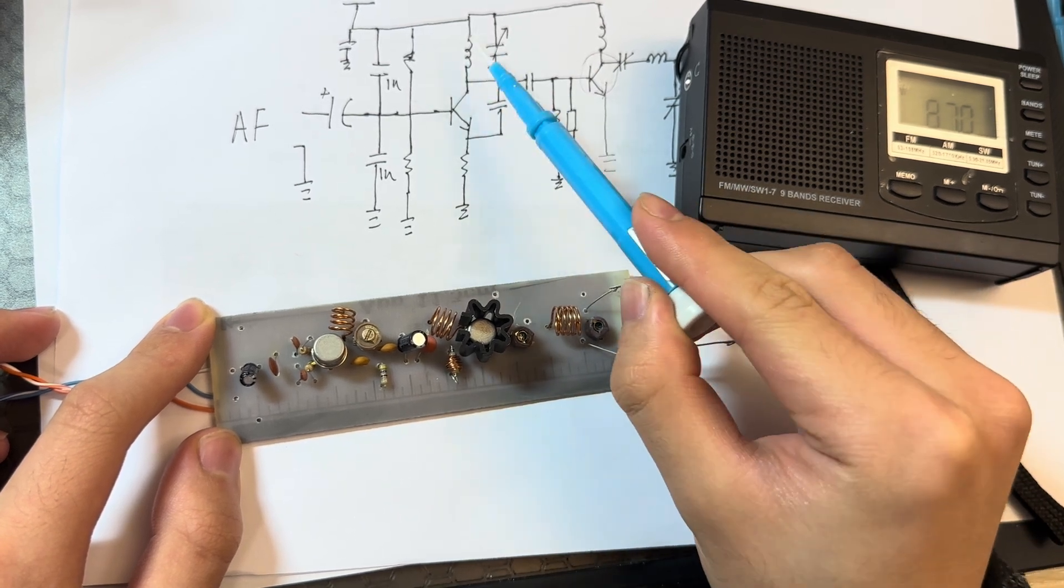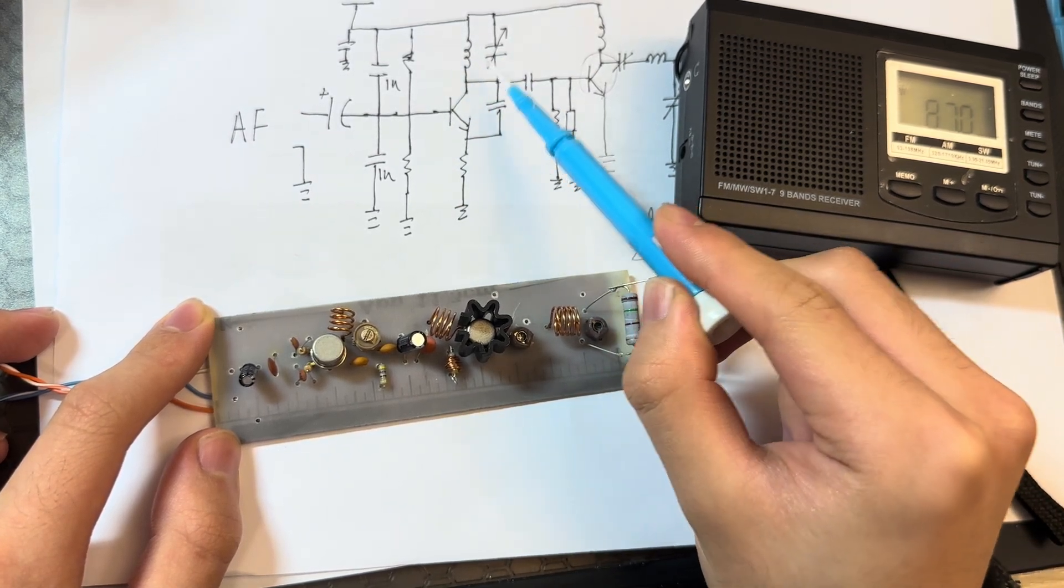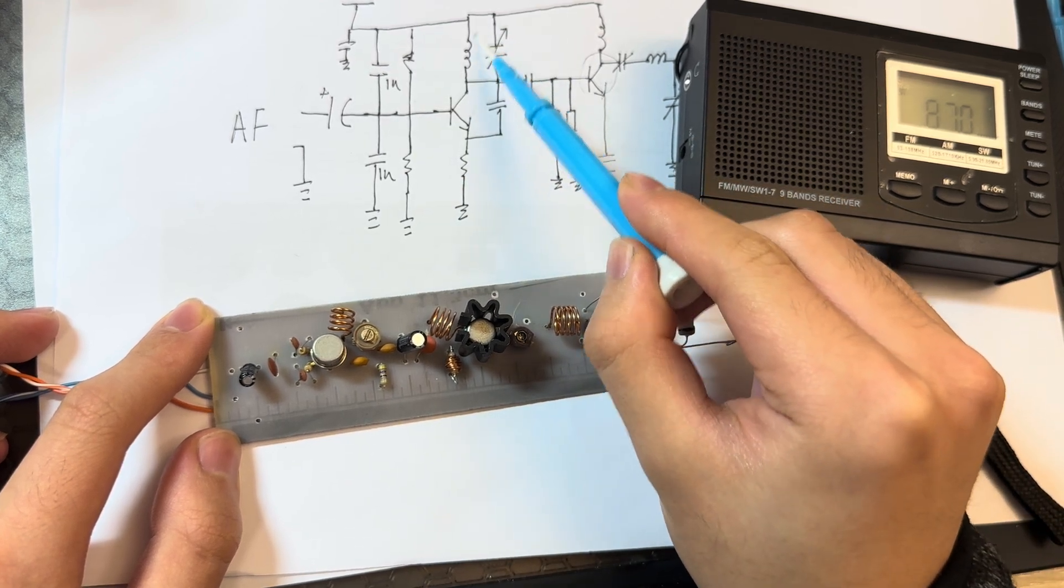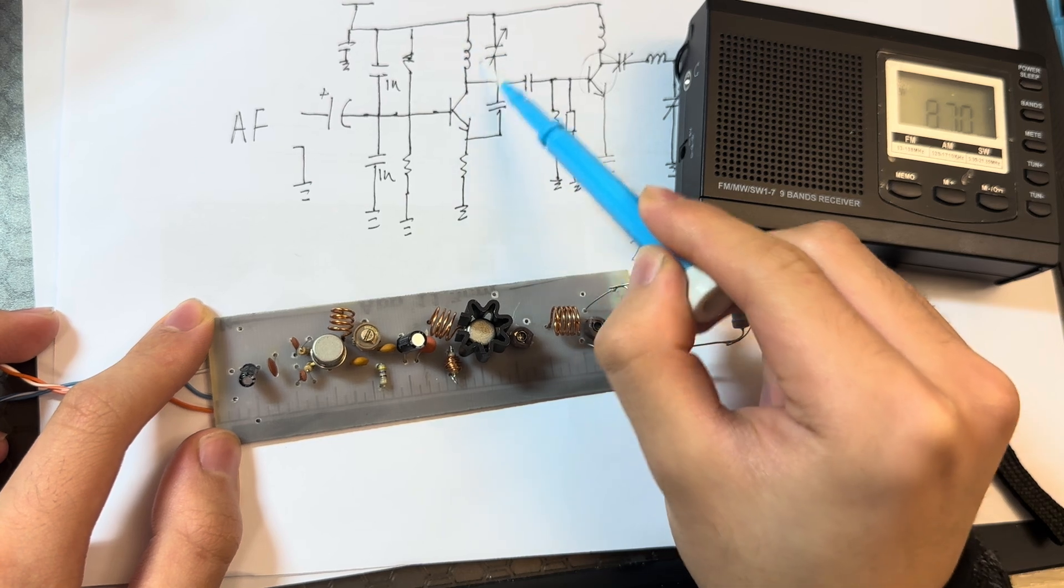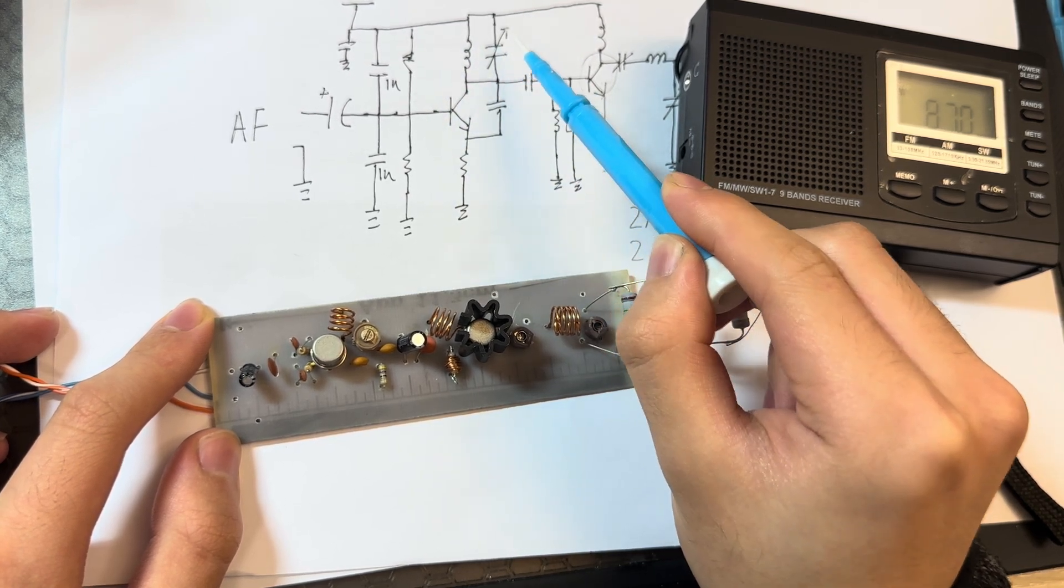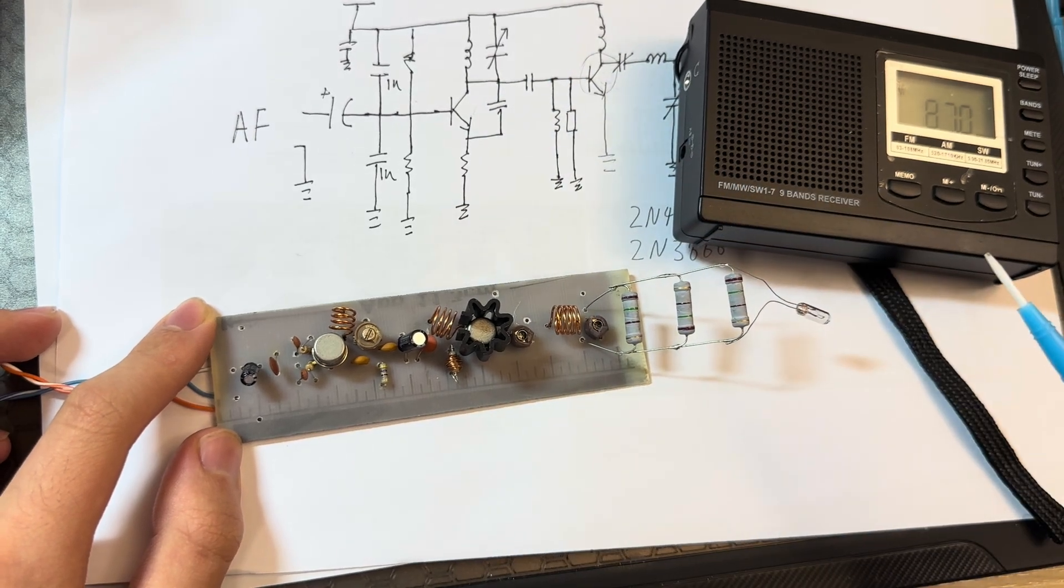If the inductance changed in an LC network, then the frequency will also change. The closer the coils are together, the less the length for the inductor, the higher the inductance will be, thus the lower the frequency will be, and vice versa.